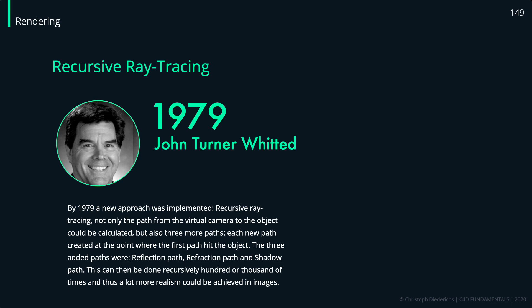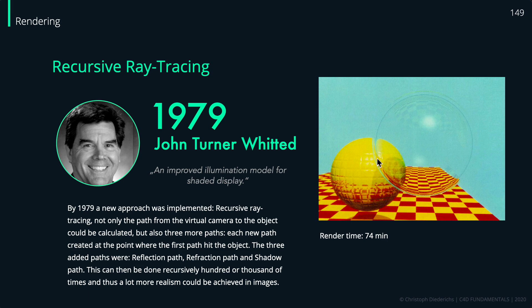Moving to 1972, John Turner Whitted came up with a new implementation called recursive ray tracing. Not only do we shoot a path from the virtual camera to the object, but also three more paths — checking for shadows, reflections, and refractions. This can be done recursively hundreds of thousands of times, creating more realistic images. He essentially invented an improved illumination model for shaded display, and his first rendered image with this approach took 74 minutes.